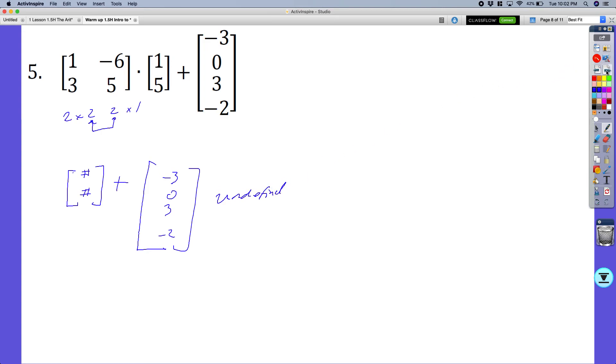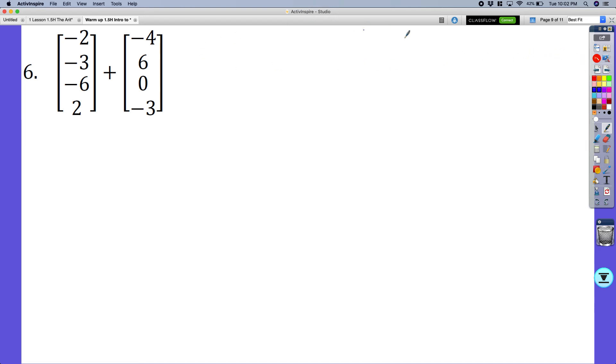But like this one, similar to the other one, you just complete the operation of what the corresponding values are. And it wants us to add these corresponding values. So right here, all it would look like then is negative 6. Negative 3 plus 6 is 3. Negative 6 plus 0 is negative 6. And 2 plus negative 3 is negative 1. So then I'm done. Nothing more for you to do here.